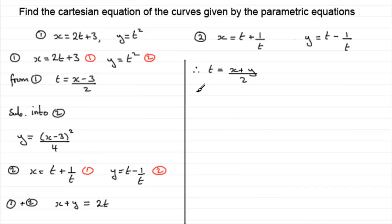So, let's say sub into equation 1. So, we've got x equals t, t being the x plus y over 2, and then we're adding 1 over t. Now, when we do 1 over t for this, it's going to be 2 over x plus y. We can invert it. So, let's just write that in there.